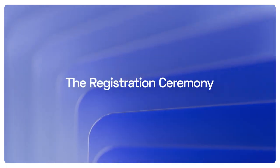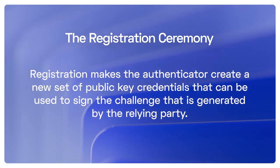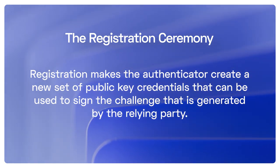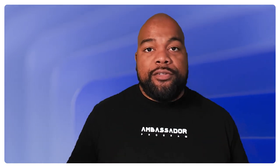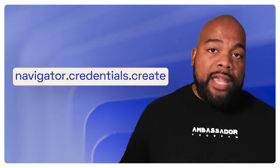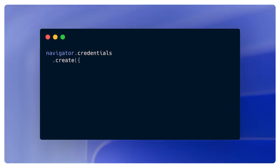The first ceremony we're going to talk about is registration. Registration makes the authenticator create a new set of public key credentials that can be used to sign the challenge generated by the relying party — we'll get into the challenge and the relying party a little later. To set up registration, we use the navigator.credentials.create function. When you call navigator.credentials.create, you pass in a public key object.